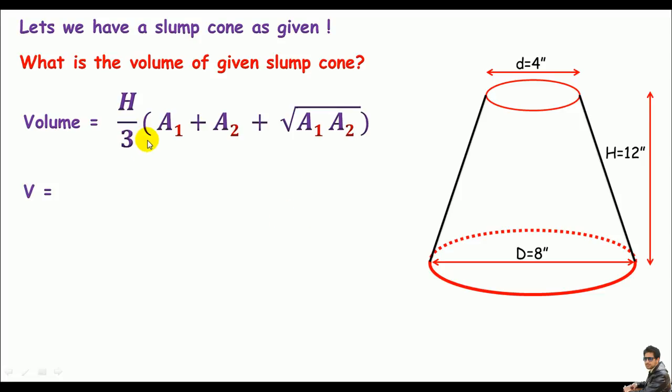If you do some plugging, the height is 12 inches so 12 divided by 3 times a1. Let me assume a1 is the top area. Remember the top is a circle and for circle we can use the formula π d squared divided by 4. The top diameter is 4 inches so π times 4 squared divided by 4 equals a1 which is 12.566 square inches.